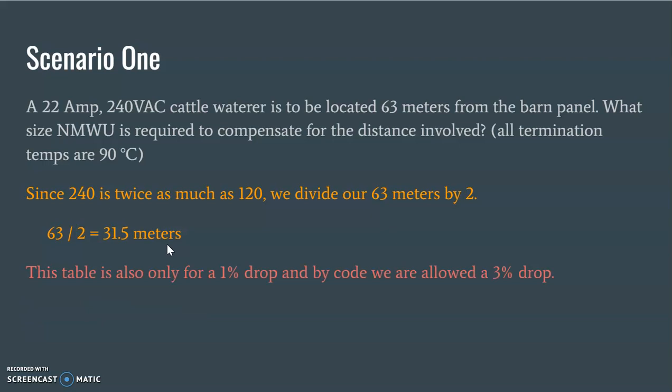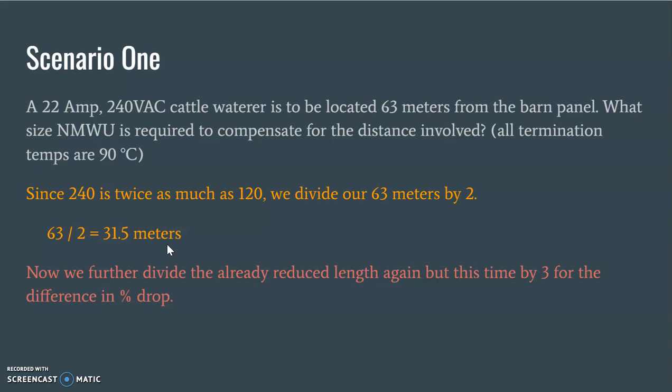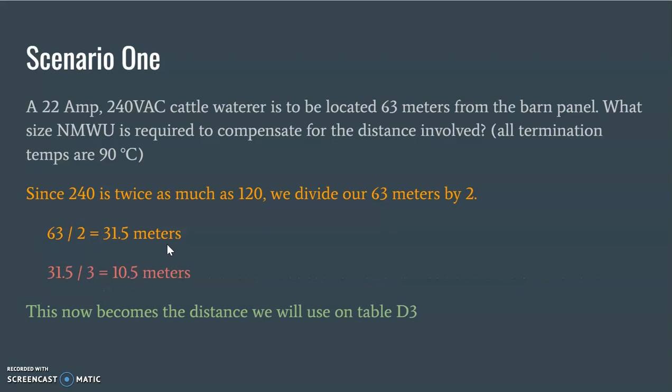But that's not it. We're not done. This table again is only good for a 1% drop. We have, or we're allowed by code, a 3% drop for this branch circuit, which again, being fed out of a panel makes it a branch circuit, and we're allowed a 3% drop. So again, we will reduce that length again, this time by 3 for the percent difference drop. So that's what it's going to look like. So take this already reduced distance here, again, divide it by 3. And so this now becomes the distance on our table that we're going to look for, because we've matched or made our 63 meters fit something that is applicable to Table D3.